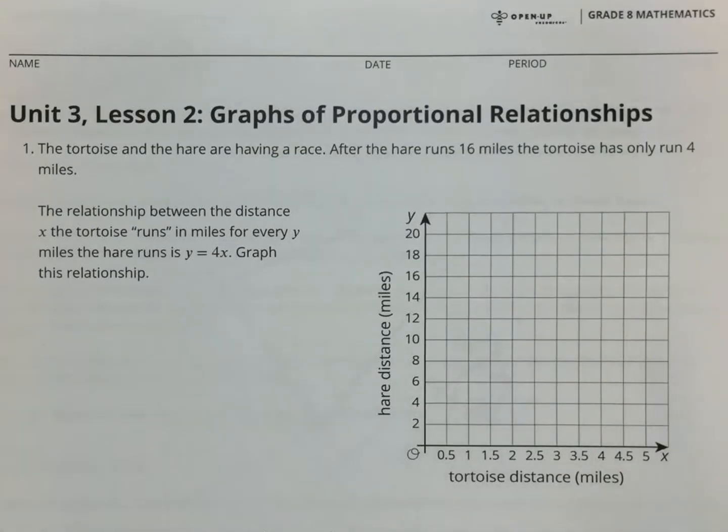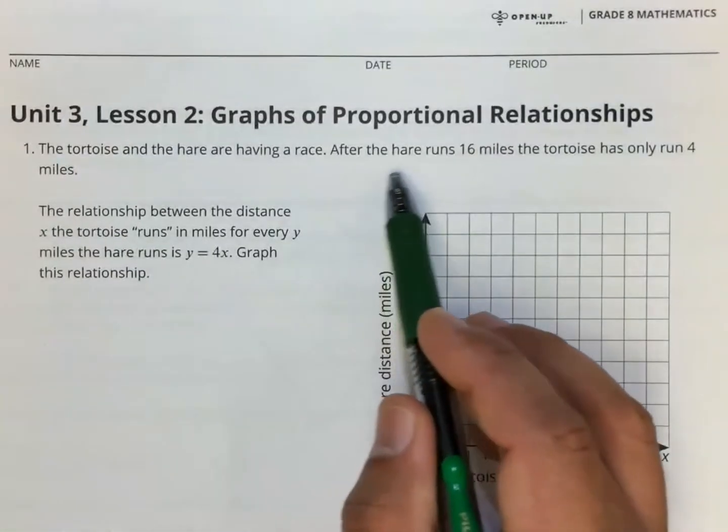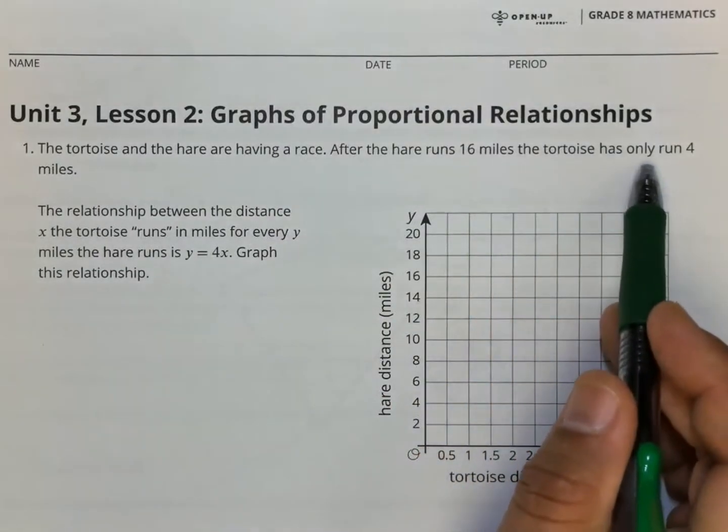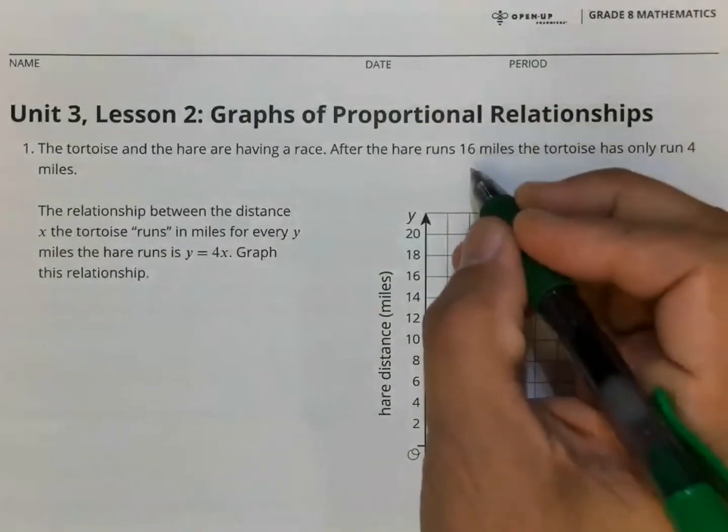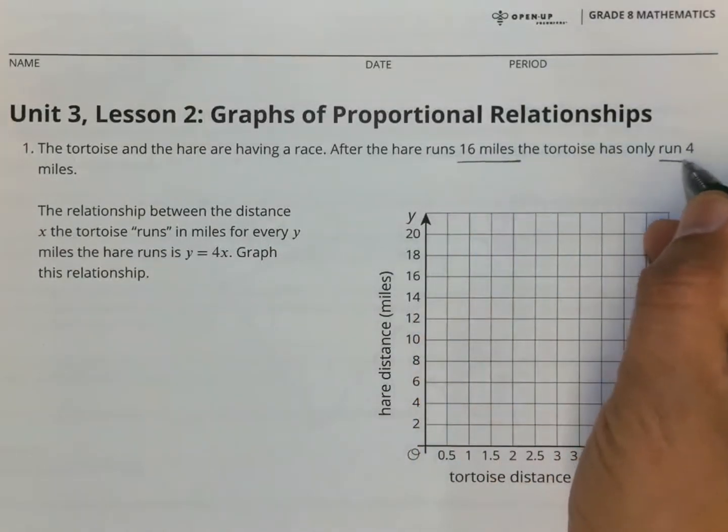So first let's read the problem here. The tortoise and the hare are having a race. After the hare runs 16 miles, the tortoise has only run four miles. So here, 16 miles, the tortoise has only run four miles. Here we have a rate.